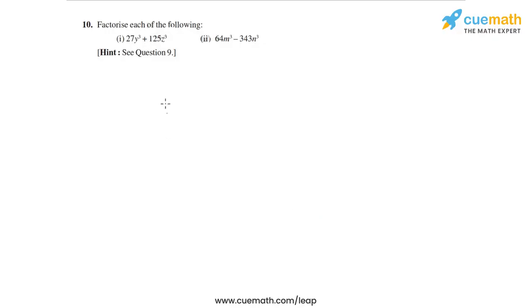In question 10, we have to factorize each of these given expressions. The first one is 27y³ + 125z³. Both of these are perfect cubes.